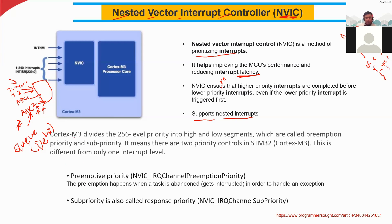Cortex M3 divides 256 priority levels into high and low segments, called preemption priority and sub-priority.